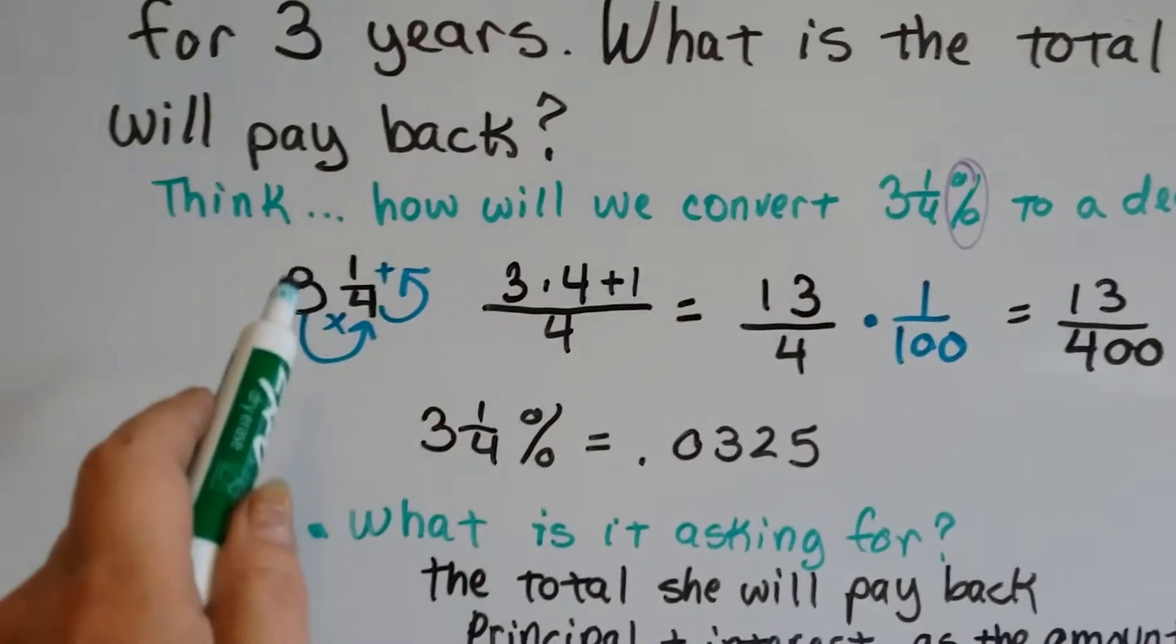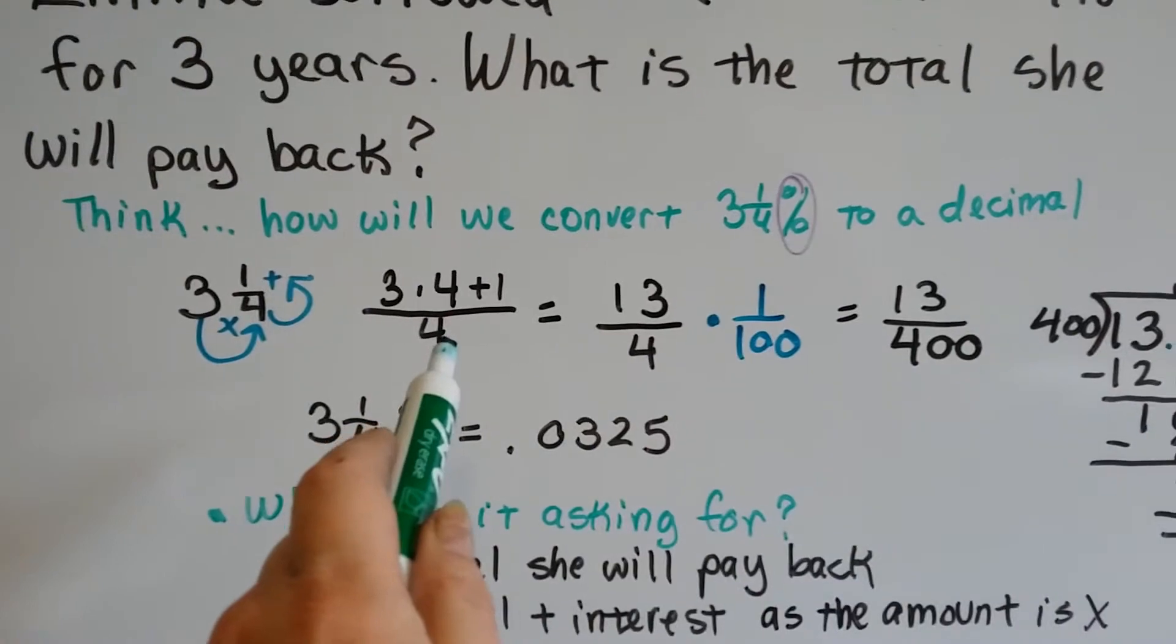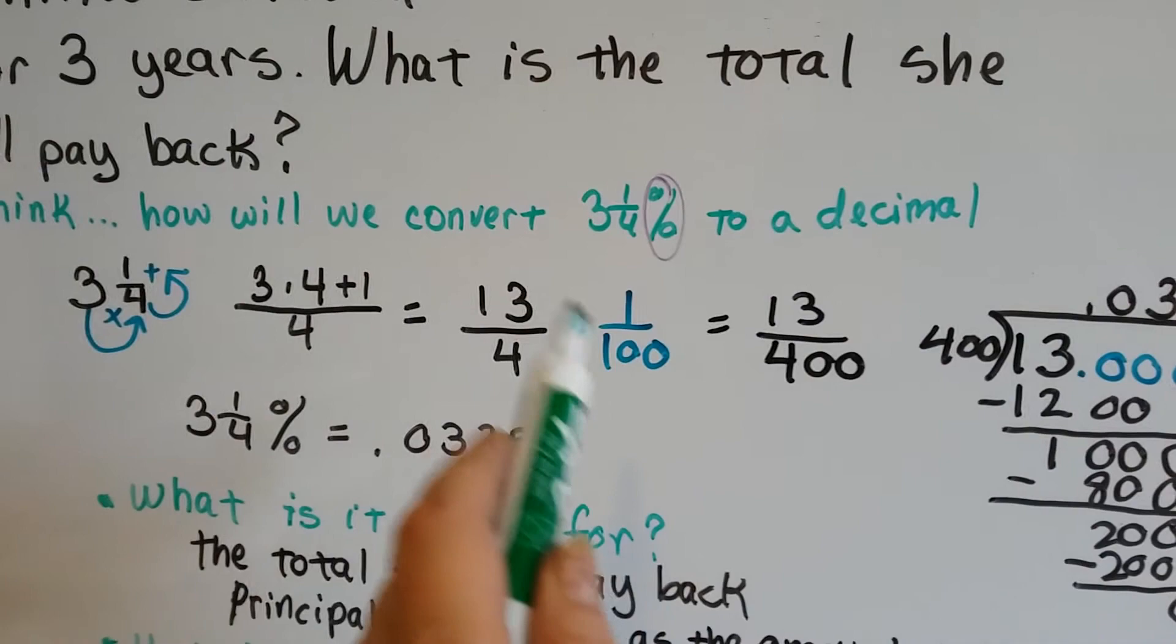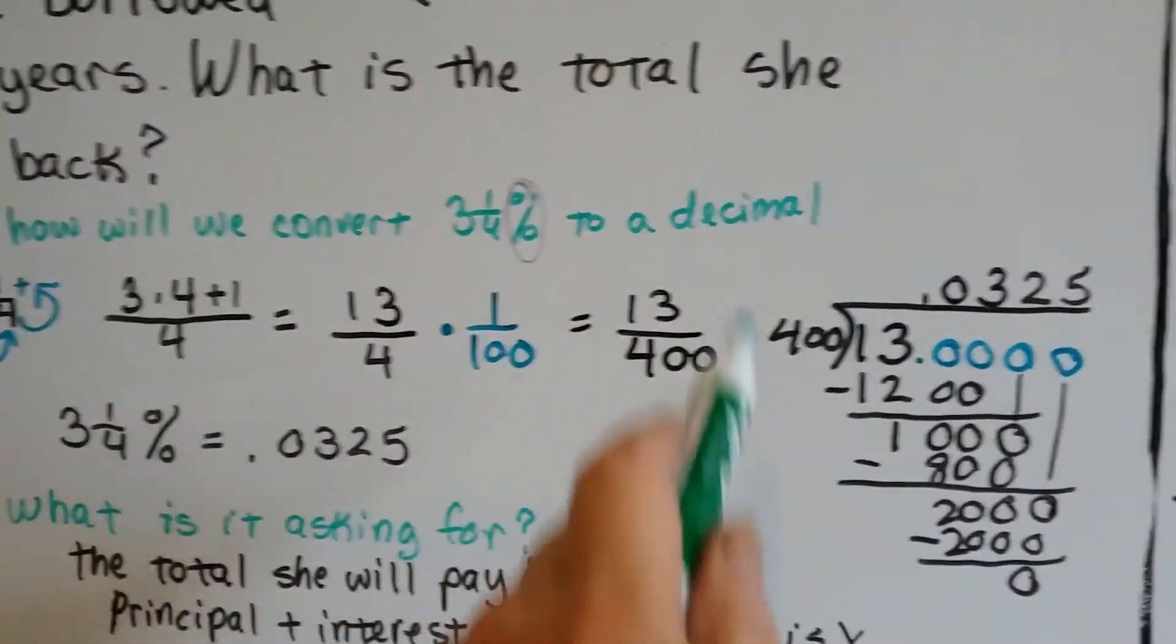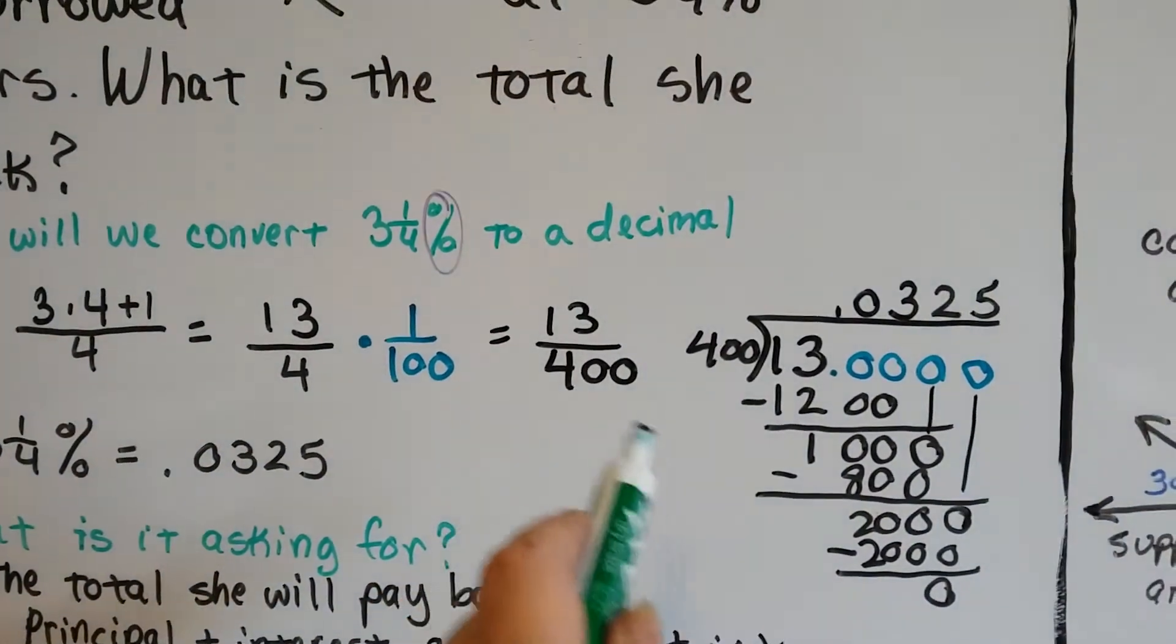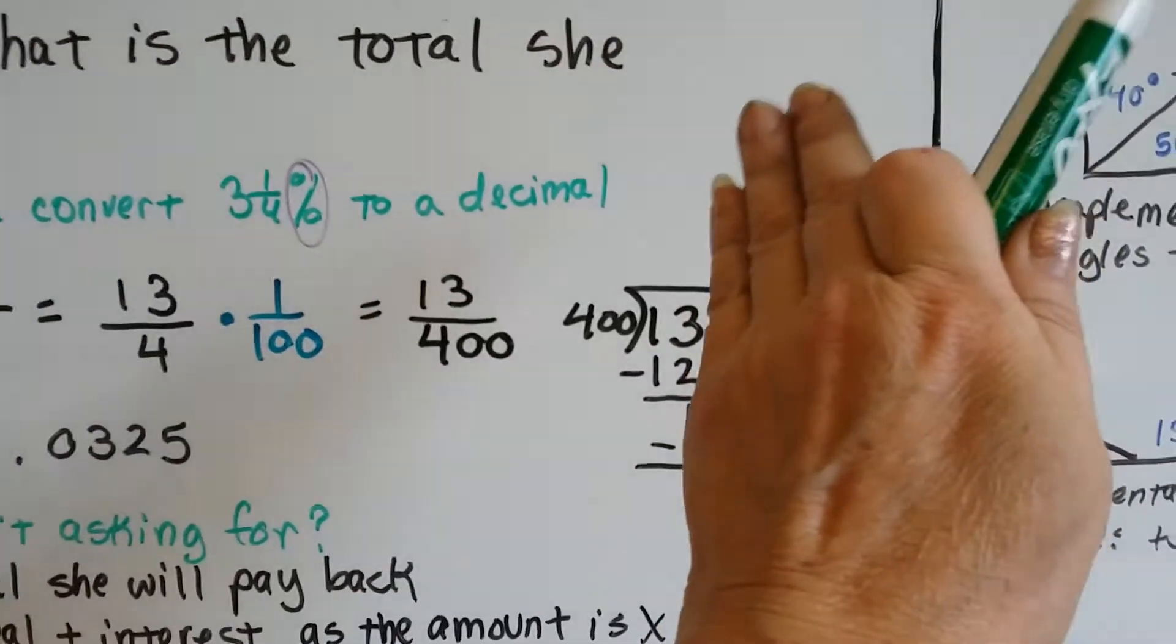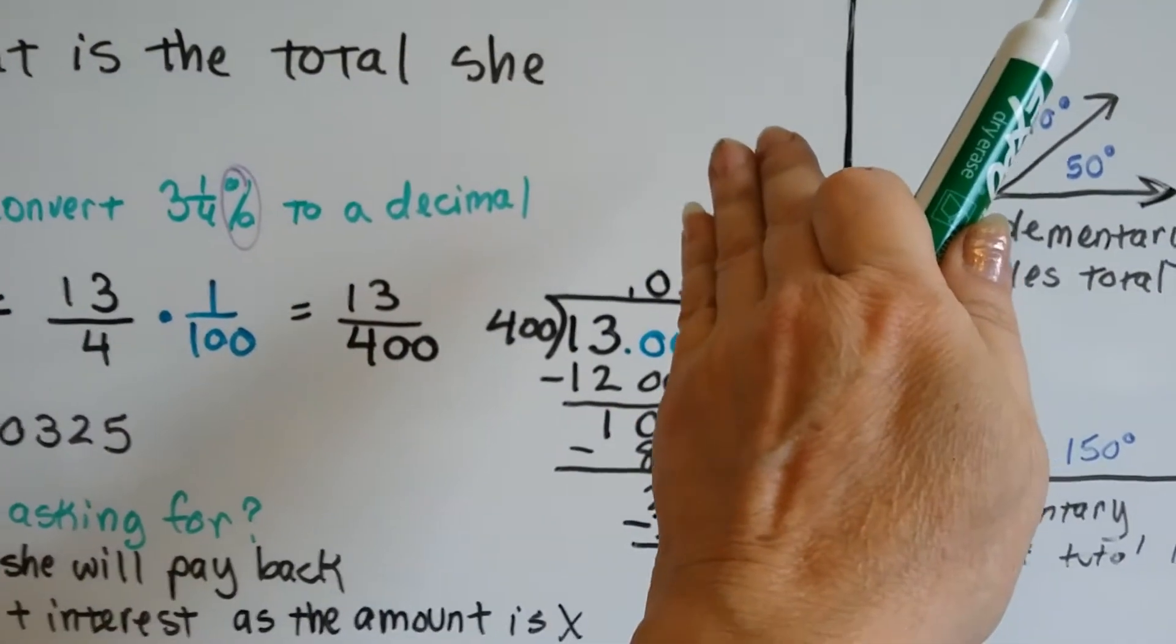So our improper fraction is 3 times 4 is 12 plus 1 is 13. It goes over the 4, the original denominator. We multiply that by 1 over 100. That's part 2. 13 times 1 is 13, 4 times 100 is 400. Now we have to do our little division problem, 13 divided by 400. We know that would be very hard to do unless we added a decimal point and a bunch of zeros. We need to put the decimal point immediately above the bar. That's the first thing we do.